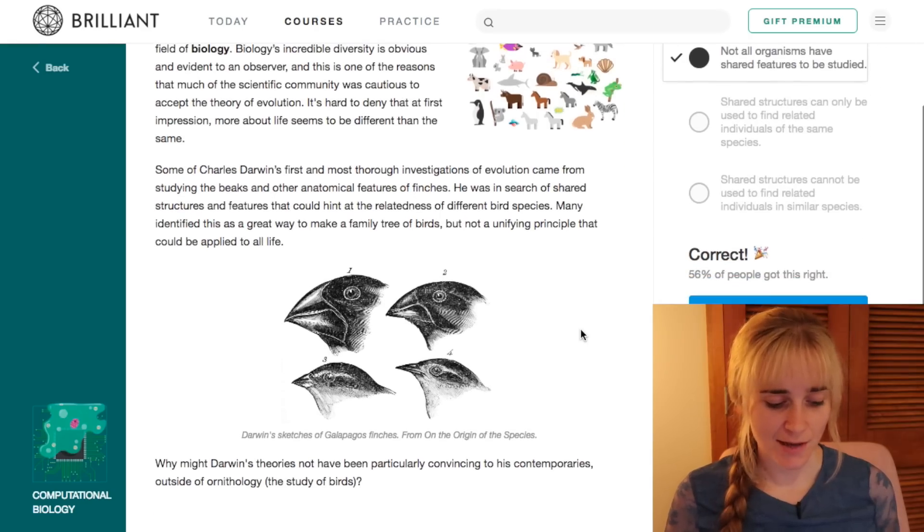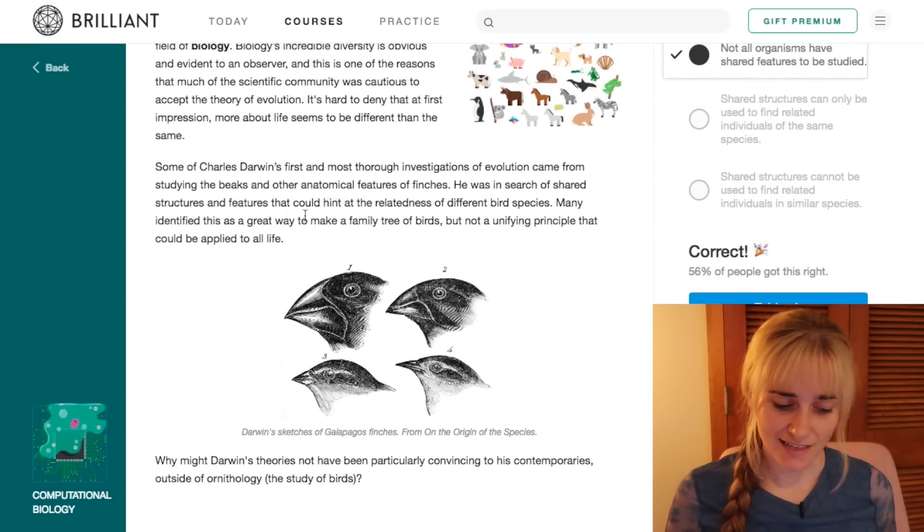This page is talking about Charles Darwin and how he was trying to find similarities or relatedness between different bird species, and he was doing this with the finches by looking at the shapes of their beaks and trying to find a unification there.